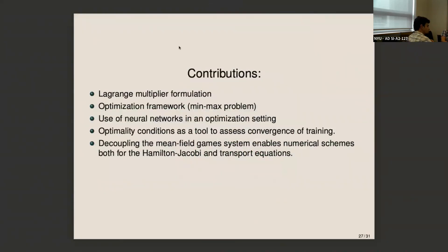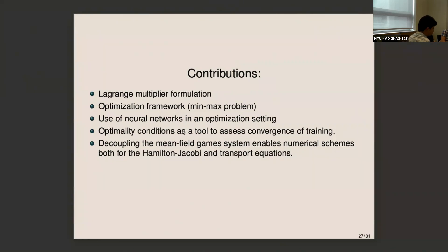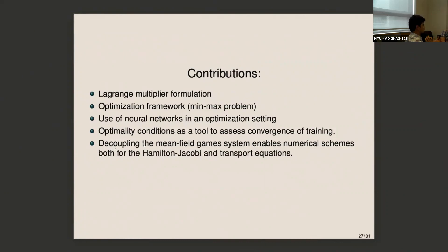To summarize: we used the Lagrange multiplier formulation for the mean field game price formation problem, applied tools from convex optimization to devise training, and formulated the machine learning framework with optimality conditions to test convergence. We approximated the price, and since the mean field game system decouples once the price is known, other well-developed numerical methods can be used separately for the Hamilton-Jacobi and transport equations. Thank you for the invitation.